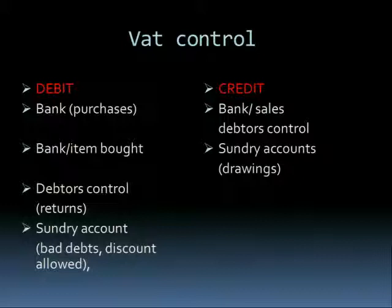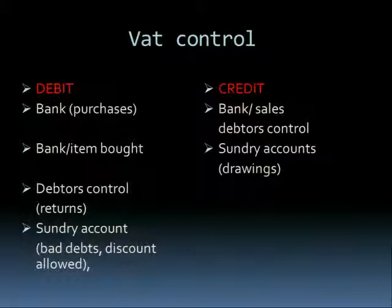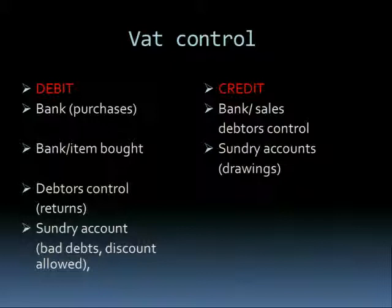Coming to the credit side of the VAT control: you will have bank for stock sales — the sales done to customers for cash must be credited. Or you write debtors control, depending on whether the sale was for cash or on credit. Sundry accounts on the credit side can include drawings — the owner can take goods for personal use. When the owner takes goods, that is drawings, and you credit it because it is VAT output.